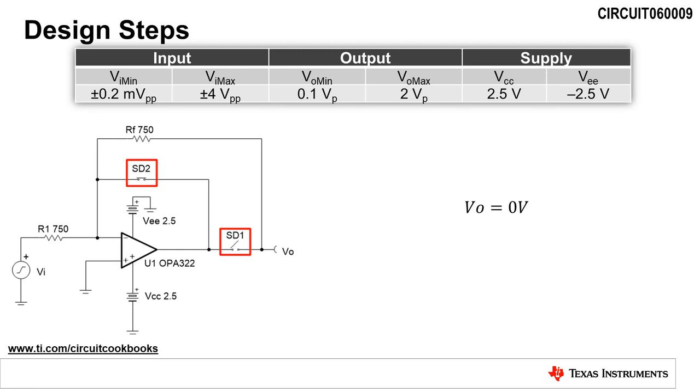Positive input signals will forward bias SD2 and reverse bias SD1. Therefore, SD2 is represented as a short circuit, and SD1 is represented as an open circuit. In this configuration, the output is 0 volts.